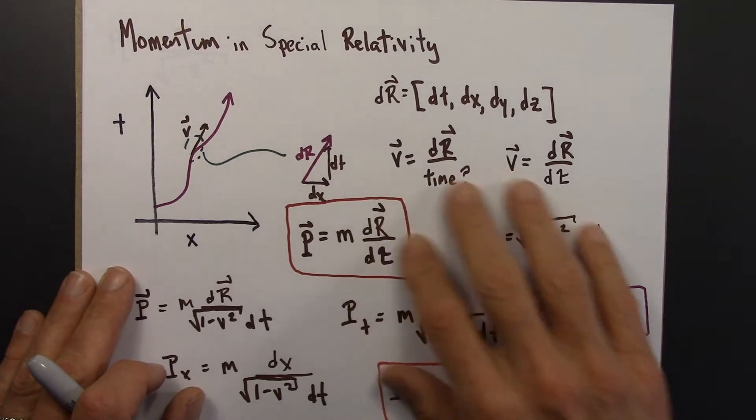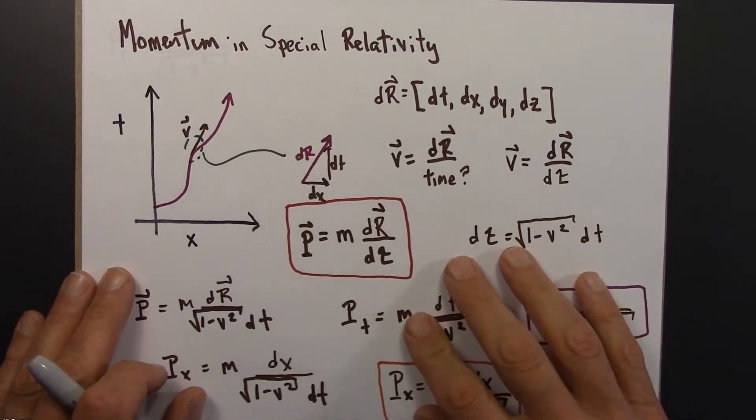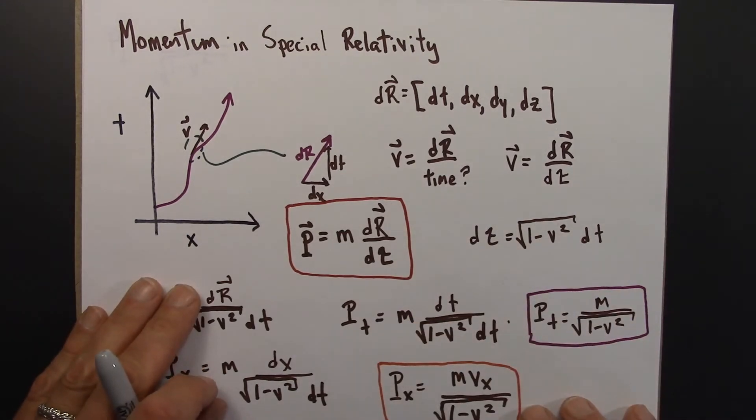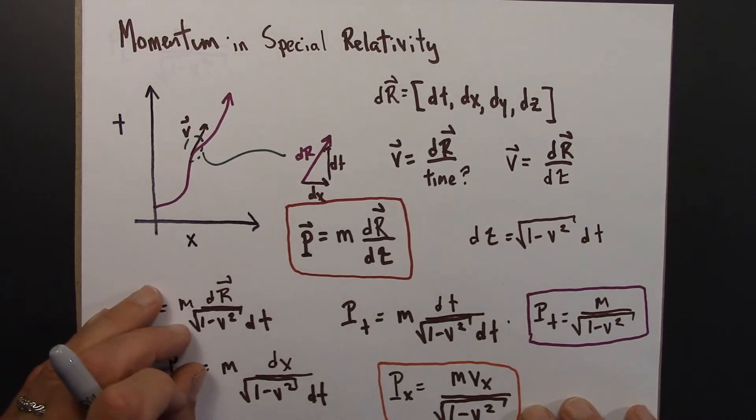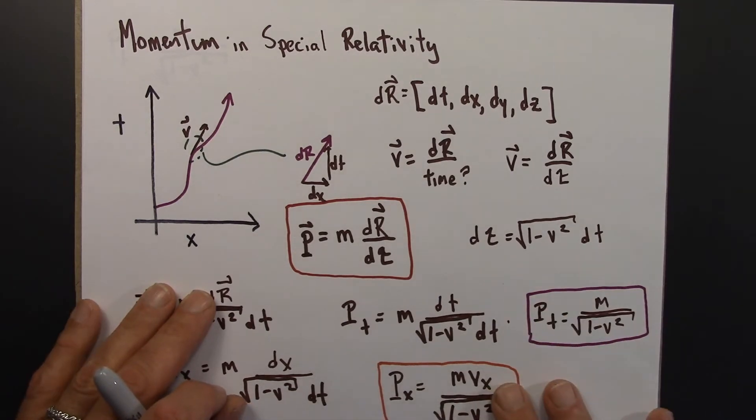So we've defined a special relativistic version of momentum, the four-momentum. We've looked at some of the properties of the four-momentum. In the last video we showed that if momentum is conserved in one frame, it's conserved in all other frames as well. What that means is that the law of conservation of momentum is the same in all inertial reference frames. It holds in all inertial reference frames, satisfying the principle of relativity.